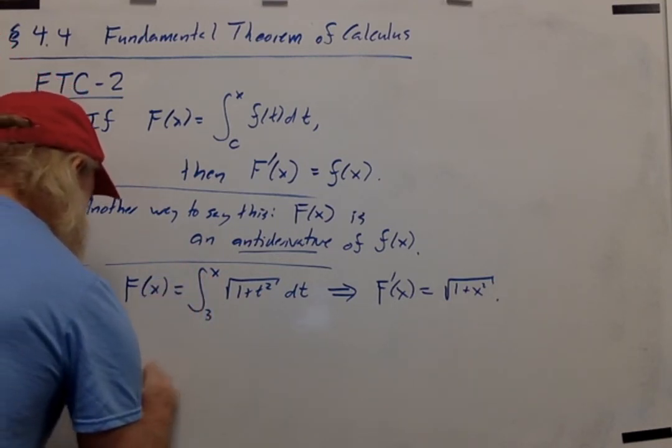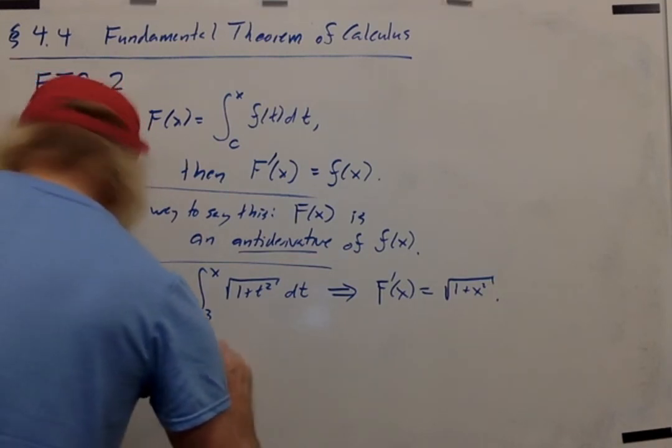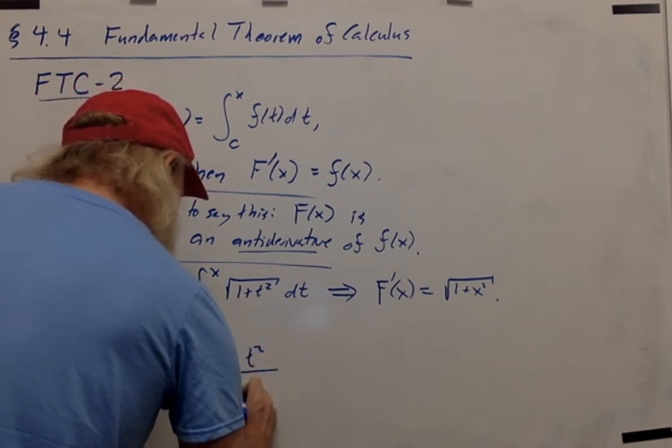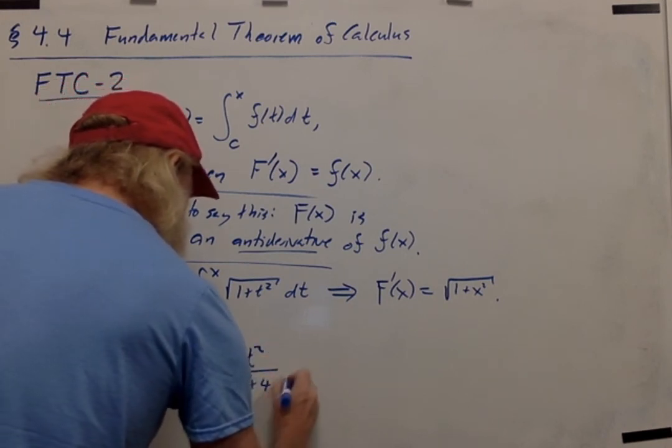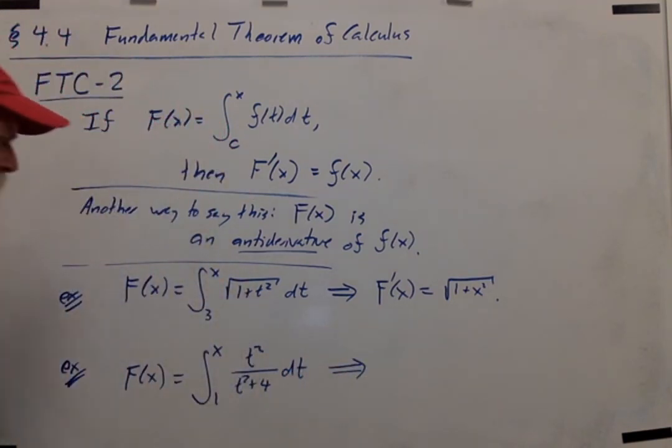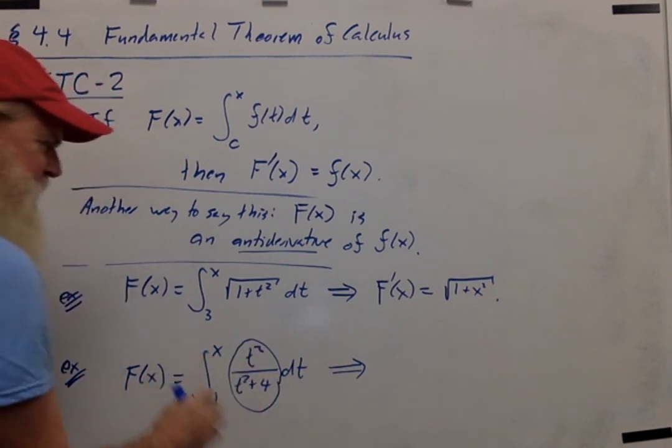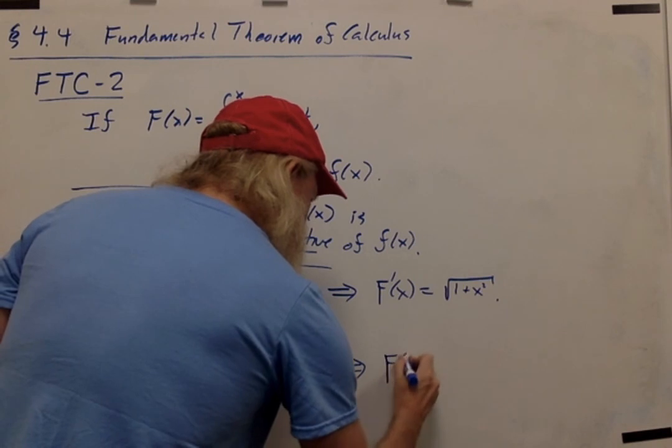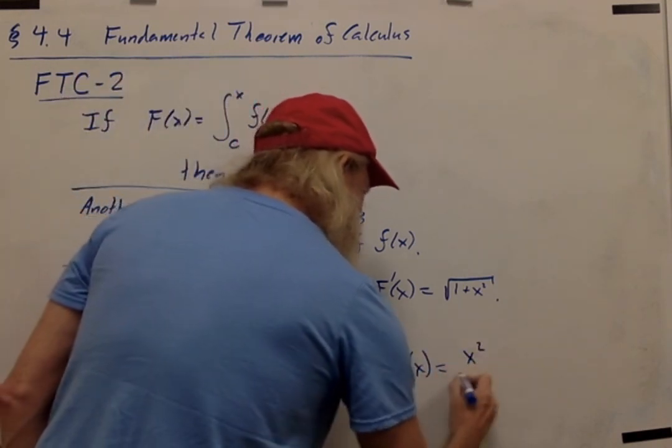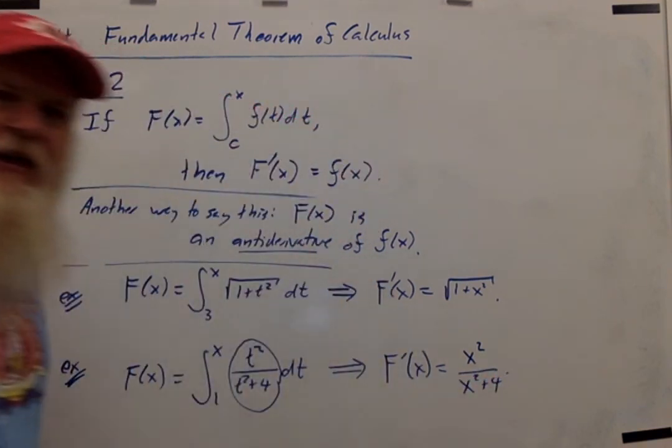For another example, if you had F(x) equals the integral from 1 to x of t squared over t squared plus 4, then when you take the derivative, all you have to do is replace the t's in the integrand with x. So the derivative of this function, big F, is equal to x squared over x squared plus 4.